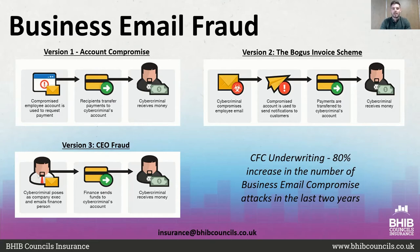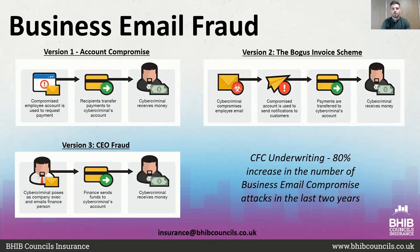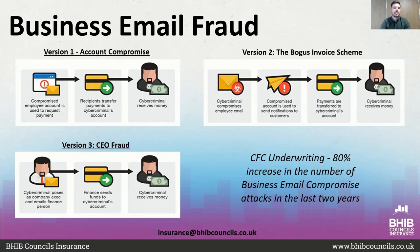The second type is bogus invoice schemes, and we've seen a big increase in these. They send a random invoice pretending to be a supplier — quite often by hacking a supplier's email account, producing a bogus invoice, and sending it to you. They may genuinely be your supplier but simply change the account number and sort code. You think you're paying your regular monthly invoice — maybe just a thousand pounds — so no alarm bells ring. Then a couple of weeks later your supplier calls to say the account is overdue, and you realize the money was paid to the wrong account details.